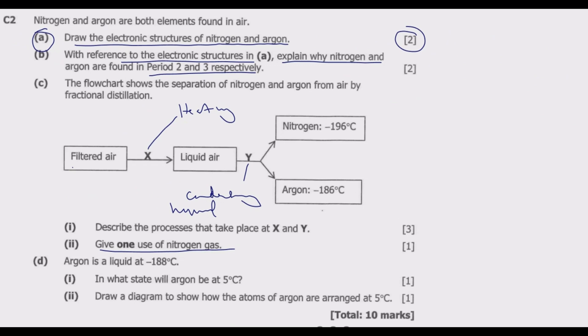Question D: argon is liquid at negative 188 degrees Celsius. In what state will argon be at positive 5 degrees Celsius? Since this is liquid at negative 188, at 5 degrees Celsius this will be gas. The common mistake is people forgetting the negative sign. As you move from negative 188 toward 5 degrees Celsius, we are increasing the temperature. So if this is liquid, by the time we reach here, this is in gaseous state.